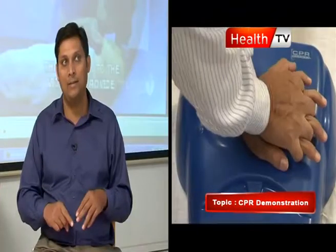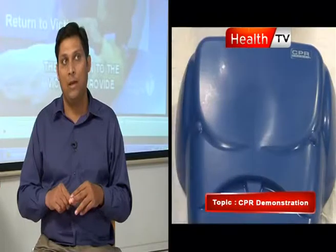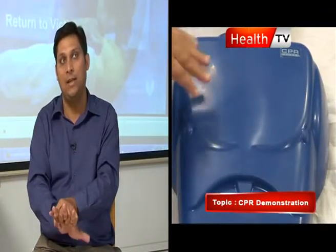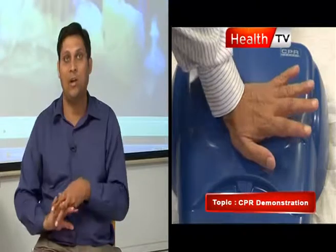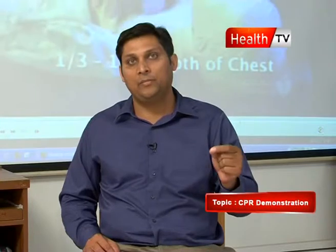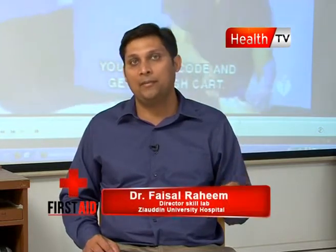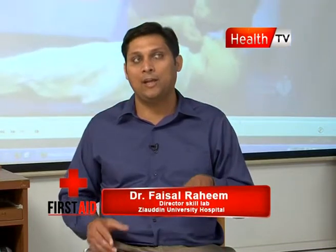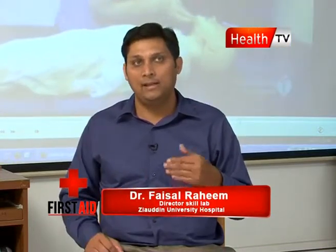You will find a line from the inter-mammary line. After that, you will interlock your hands on top of each other. We will give 30 compressions at a rate of at least 100 compressions per minute. After 30 compressions, you will do head-tilt chin-lift, which is part of A in C, A, B. So we have covered C, now we are in A. We will do head-tilt chin-lift, which will patent the airway with this maneuver.